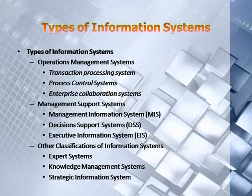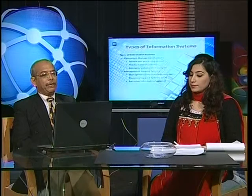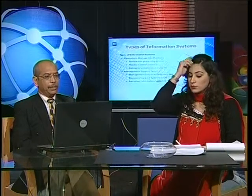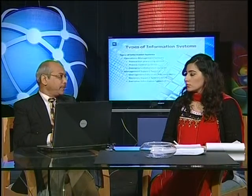The second major category is management support systems, also divided into three: management information systems, decision support systems, and executive information systems. Systems that help management with various reports are called management information systems. Critical reports that help you decide something — like which item to discontinue or which area to emphasize — are called decision support systems. A summary of all these systems in easy-to-retrieve executive form is called executive information systems.